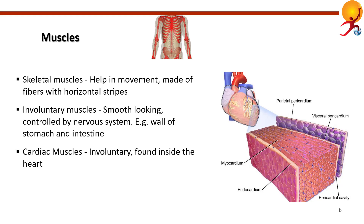Cardiac muscles are an involuntary type of muscle found in the heart. Their rhythmic, powerful contractions force blood out of the heart as it beats. Cardiac muscle contraction is totally involuntary — it has nothing to do with nervous stimulation or any conscious control.